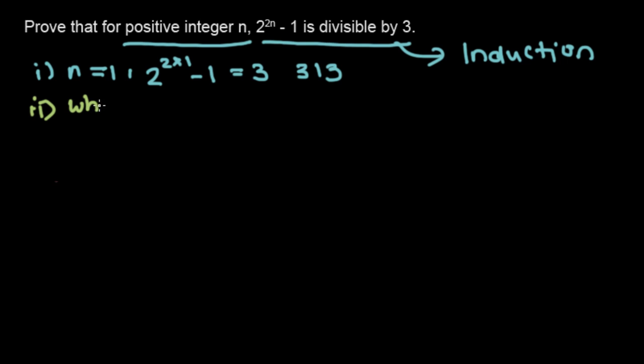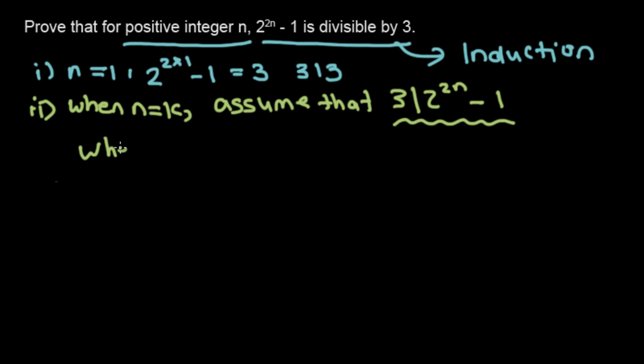So when n equals k, assume that 3 divides 2 to the 2n minus 1. This is our inductive hypothesis. And then we prove that when n equals k plus 1, 3 divides 2 to the 2 times k plus 1 minus 1.